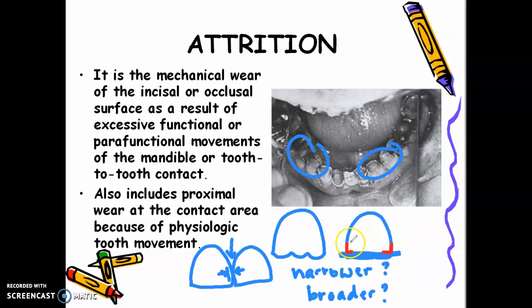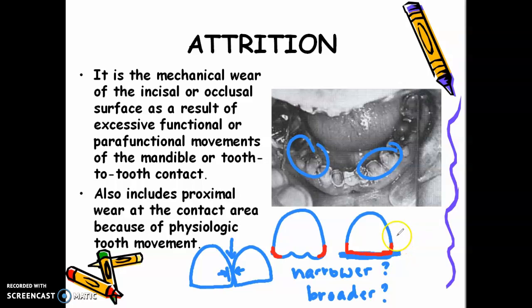So when a patient says, 'Doc, I want to look younger,' would you make a sharp incisal angle on your composite veneer or restoration, or would you make a rounded incisal angle on your incisors? Don't add mamelons just to look younger. Comment down your answers — would a sharp or a rounded incisal angle make the patient look younger?